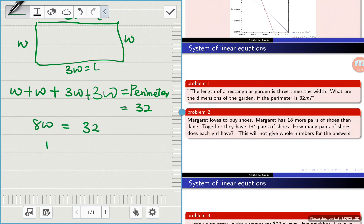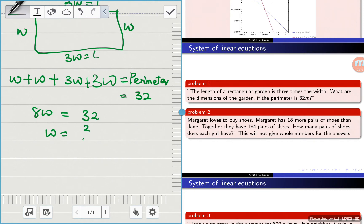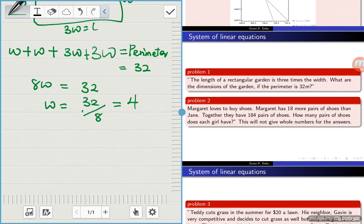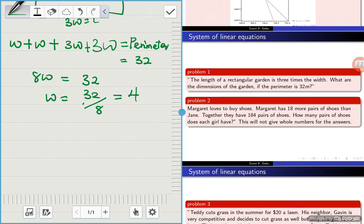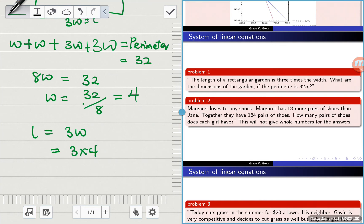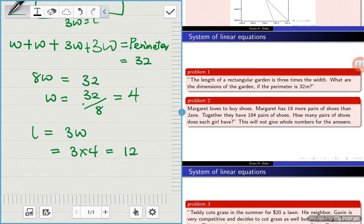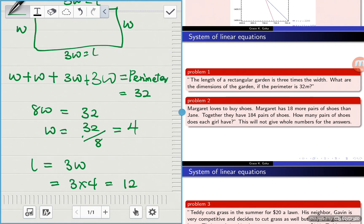Therefore, our W is equal to 32 divided by 8, and this is equal to 4. So the width is equal to 4. Then it means that our length, which is equal to 3W, is equal to 3 times 4, and this is 12. So the garden's length is 12, and its width is 4.